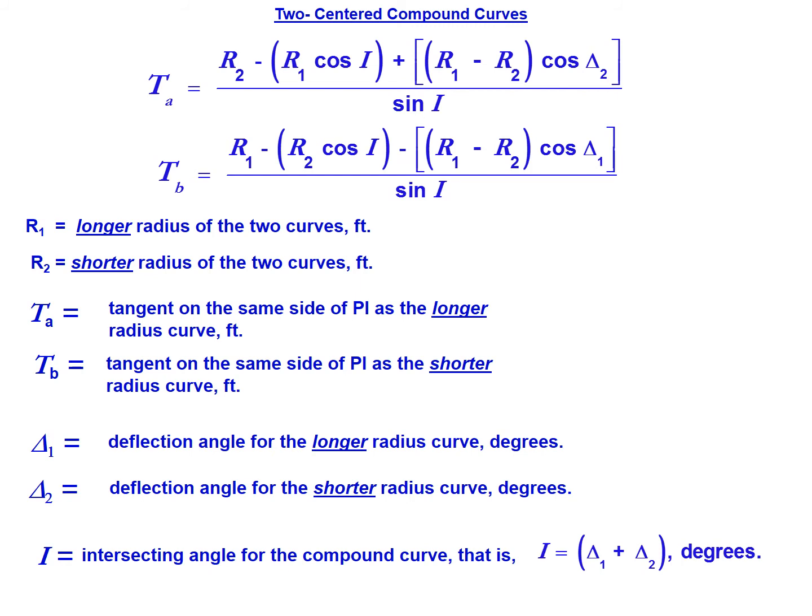T sub B equals R1 minus R2 times the cosine of I, plus R1 minus R2 times the cosine of delta 1, all divided by the sine of the intersecting angle. In most cases, all you're looking for is the tangent length between the PI and the PC, so usually you will only need to solve for either T sub A or T sub B.